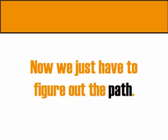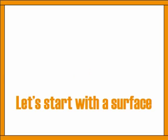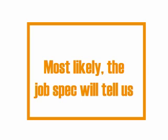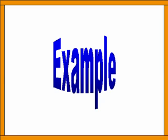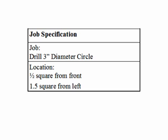Now all we have to do is figure out the path — how to tell the machine the path to cut. Given our checkerboard and our desire for a three-inch diameter circle, we'll start with our classic checkerboard surface. The job specification will tell us where we want the hole drilled. Our job is to drill a three-inch diameter circle at the location one half square from the front border and one and a half squares from the left border.